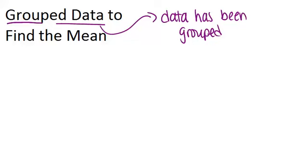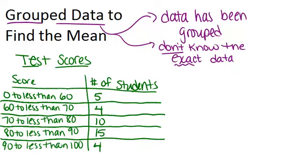Let's look at an example. This data is a group of test scores for a recent test. And as you can see, it has the data grouped into different sections.